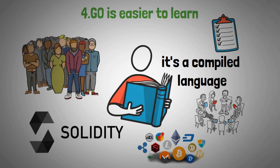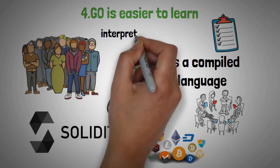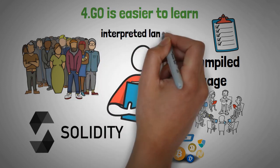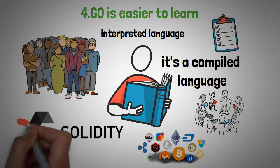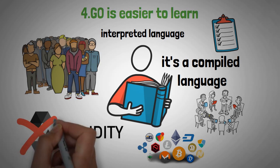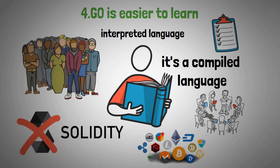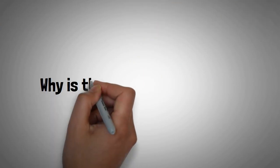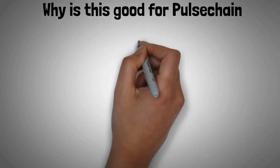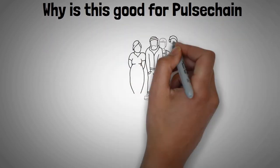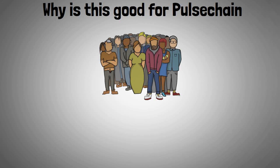This is in contrast to Solidity, which is an interpreted language. With Solidity, the code is not checked for errors until it is actually run — by then, it might be too late and a hacker might have already made off with the funds. This is good for PulseChain because it simply means that more people will be able to develop on the PulseChain network, which would lead to more innovation and growth.